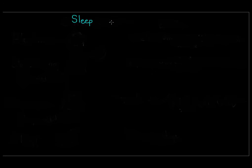Even though you're not conscious during sleep, your brain is deceptively active. It goes through multiple cycles with distinct brain patterns, and it's very important to your ability to perform normal functions when you're awake. You have four main stages of sleep.